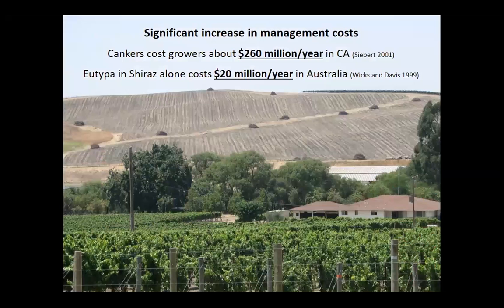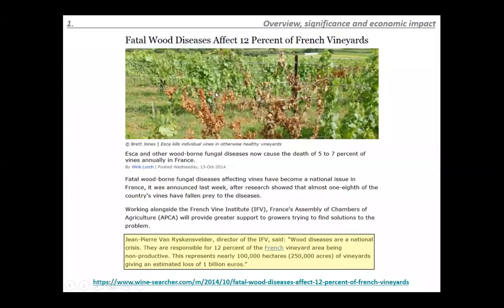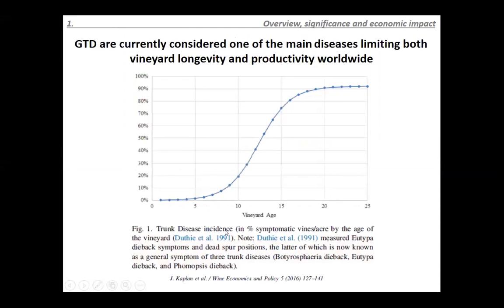What is true is that grapevine trunk diseases are causing a significant increase in management costs. In California, grape growers are spending over $260 million a year to fight trunk diseases. A study by Trevor Wicks in 1999 showed that just one disease — Eutypa — in one variety, Shiraz, in Australia was costing about $20 million per year. More recently, a 2014 study from France found that ESCA has been categorized as a crisis in France and across Europe, with approximately 12% of French vineyards economically unviable, over 100,000 hectares affected, and costs of about one billion euros.